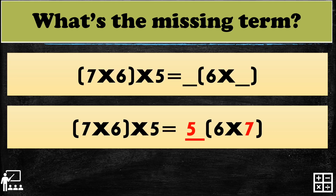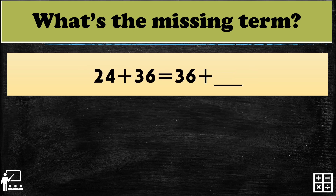Next: 24 plus 36 equals 36 plus blank. You may use the calculator to check if both sides are equal. That's 24.